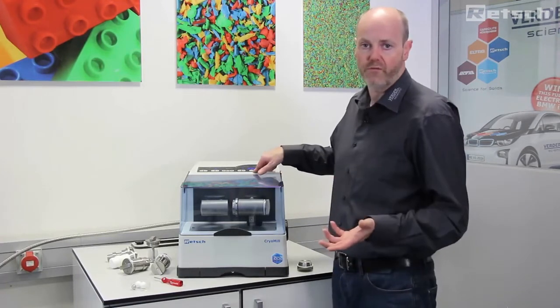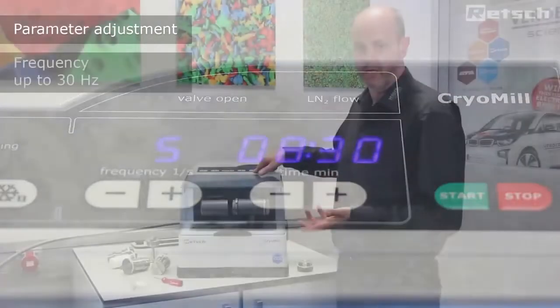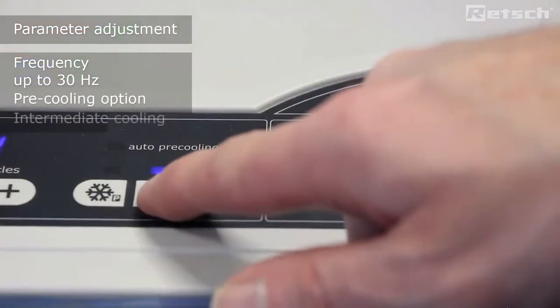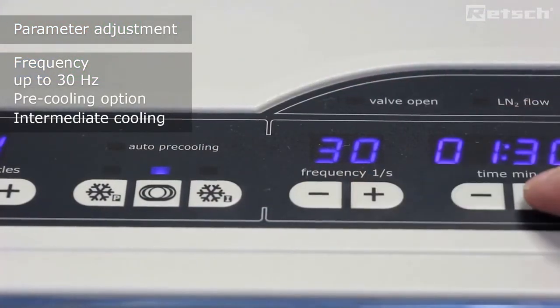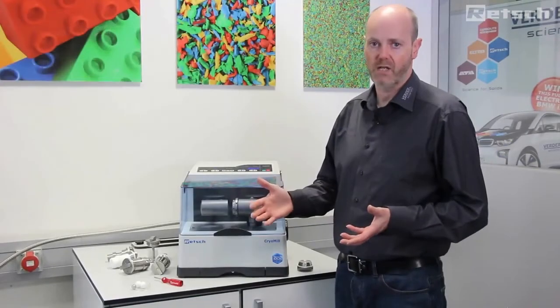Typically we will freeze the material for between five and ten minutes in the pre-cooling phase. Then we will set the time and the amplitude for the milling cycle itself. Typically a milling cycle will not exceed three minutes in duration.